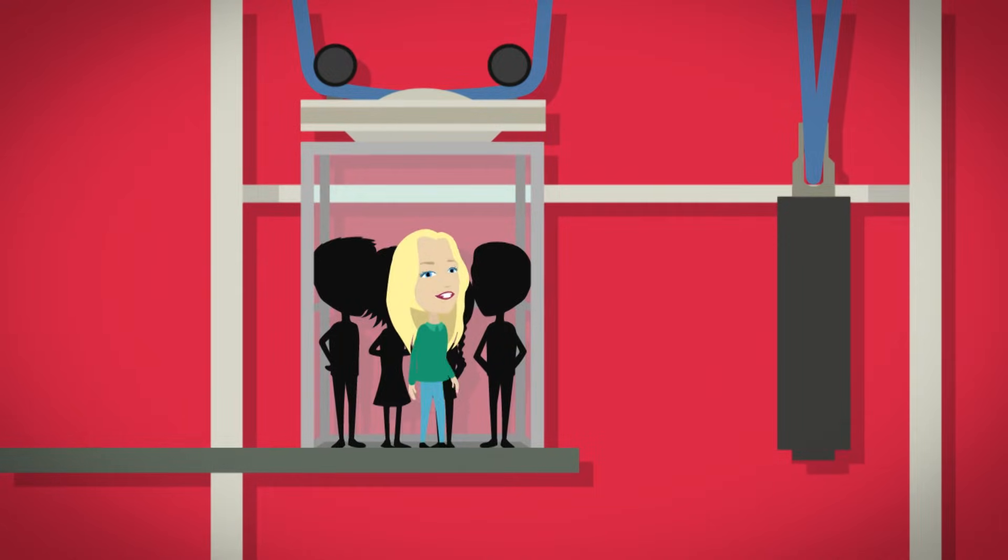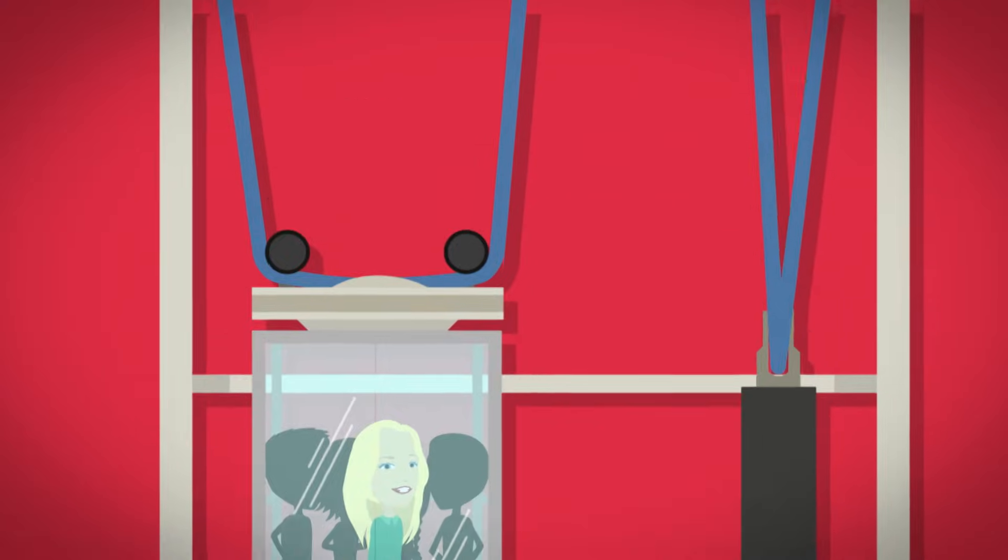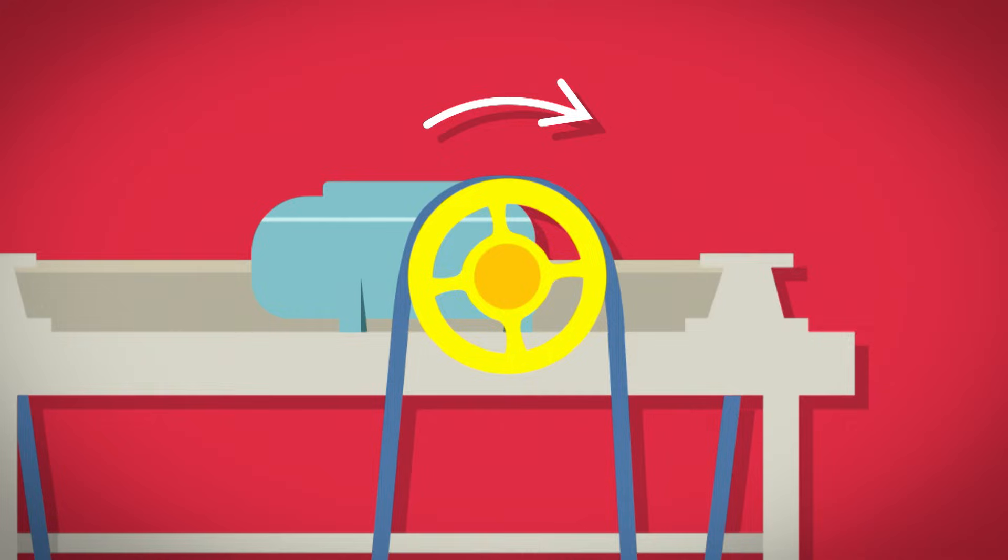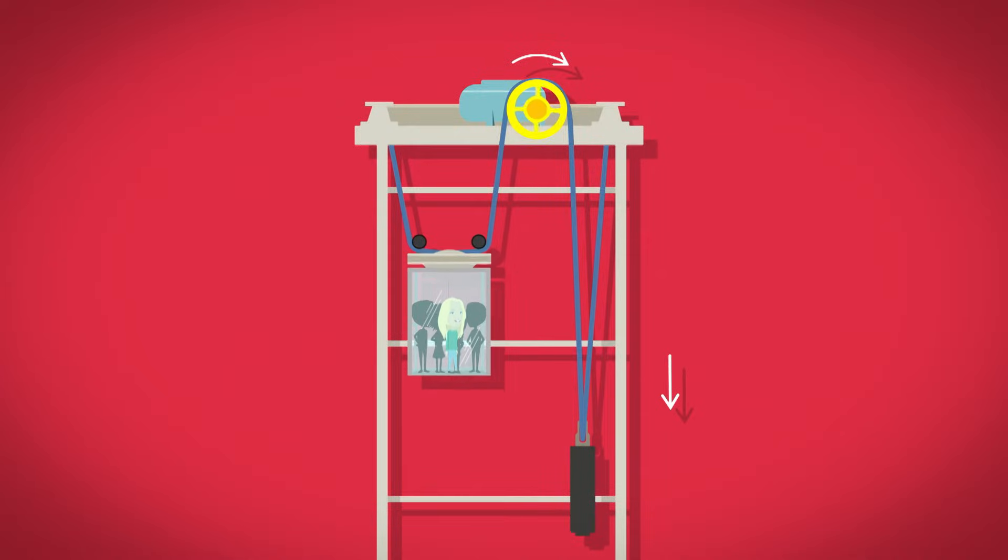When we want the lift car to go up, an electric motor turns the sheave wheel. As the sheave wheel turns, it moves the steel ropes, lowering the counterweight. As the counterweight moves down, the lift moves up, to the top.